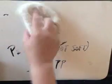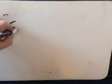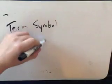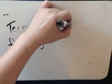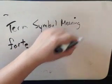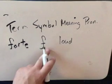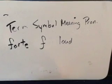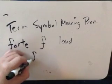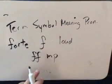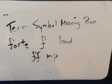The table has the term, like forte; then the symbol, like the F; then the meaning or definition, which is loud; and then the pronunciation. On your test, if I give you any one of these pieces of information, you should be able to supply the corresponding symbol, term, or definition. Or, if I give you a bunch of these together, you could put them in order from loudest to quietest or quietest to loudest.